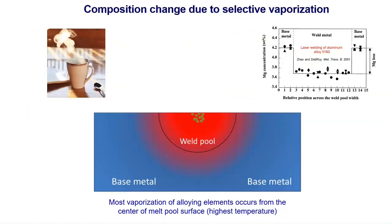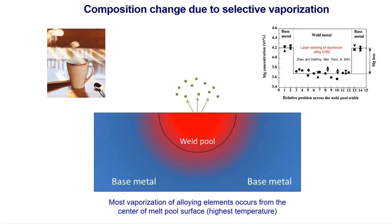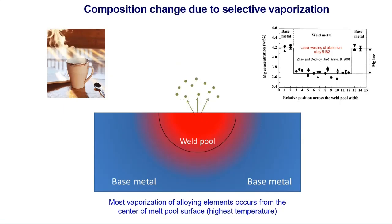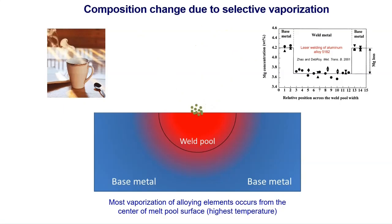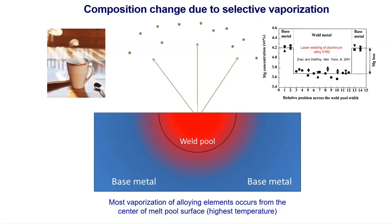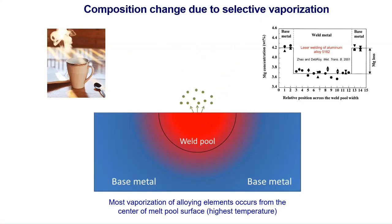Just like the evaporation of water molecules from a coffee mug, selective vaporization of alloying elements from the molten pool during additive manufacturing can lead to significant composition changes in the final parts. This phenomenon occurs due to the high temperatures reached in the melt pool, causing volatile elements with lower boiling points to selectively evaporate, as explained in the animation.